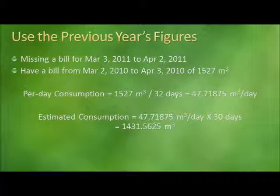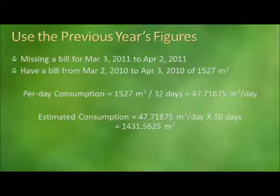In this example, a natural gas bill is missing for the period of March 3, 2011 to April 2, 2011. However, a bill for the same facility is available from March 2, 2010 to April 3, 2010 with a consumption value of 1,527 m³. To obtain the historical per-day consumption, we divide 1,527 by 32 days — the span from March 2 to April 3, 2010 — yielding approximately 47 m³ per day. To obtain the estimated consumption, this value is multiplied by 30 days, the span from March 3, 2011 to April 2, 2011, giving a result of approximately 1,431 m³.